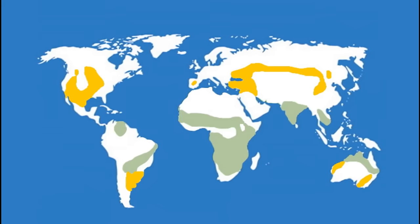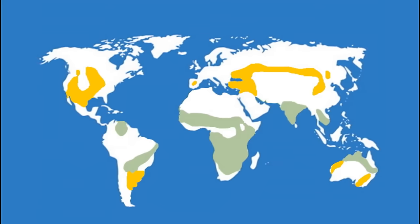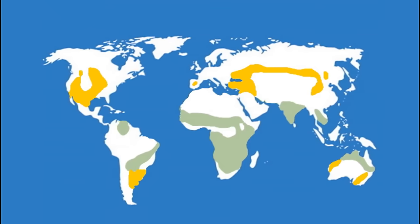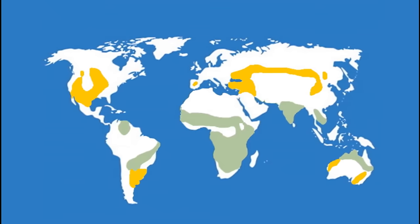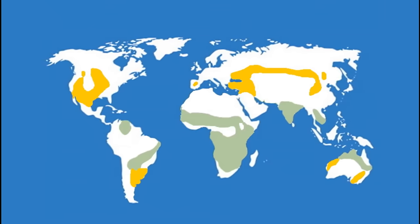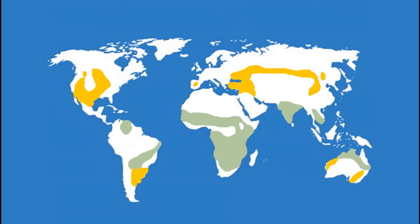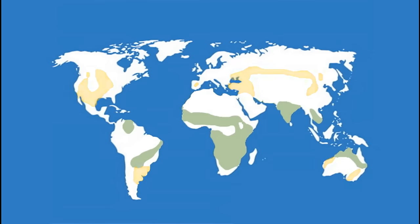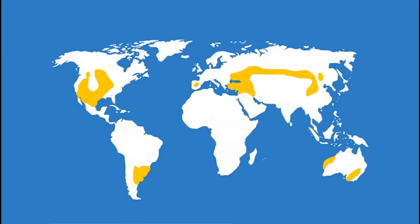Grasslands are found on every continent except Antarctica. There are two main types of grasslands: tropical grasslands, which are also called savannas, and temperate grasslands.